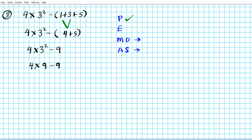With this setup, do we multiply or subtract first? In the order of operations, multiplication comes before subtraction. So we multiply first: 4 times 9 is 36. So we have 36 minus 9 — that's the last operation. 36 minus 9 is 27. And that is the answer to question number 3.